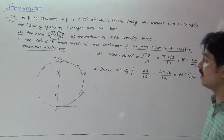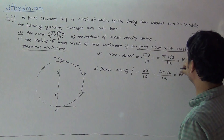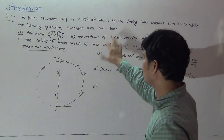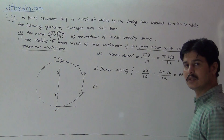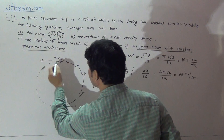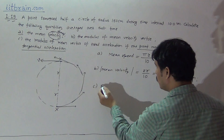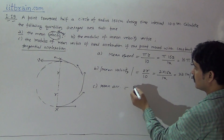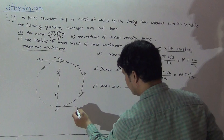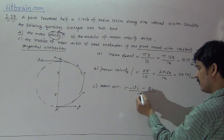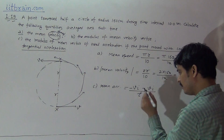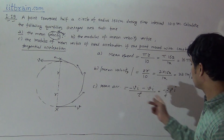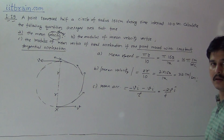For the third part, mean acceleration equals final velocity minus initial velocity divided by time taken. At point X the initial velocity is +Vî and at point Y the final velocity is −Vî (direction reversed after half circle). So mean acceleration = (−Vî − Vî) / T = −2V/T · î.